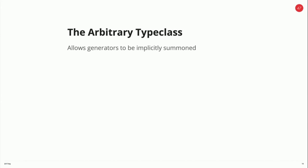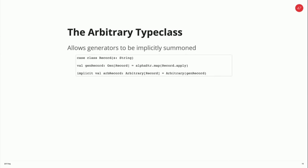We call sample, and then we get nice strings that are full of lowercase letters but the first one is always going to be capitalized. As I mentioned, the arbitrary type class allows these generators to be implicitly summoned. So we can create our own types — we could have a Record type, then take an alpha string generator, map that onto this record type, and now we have a generator for records. Then we can create an implicit for this generator by wrapping it in an arbitrary class. This allows us to call forAll with our new type.